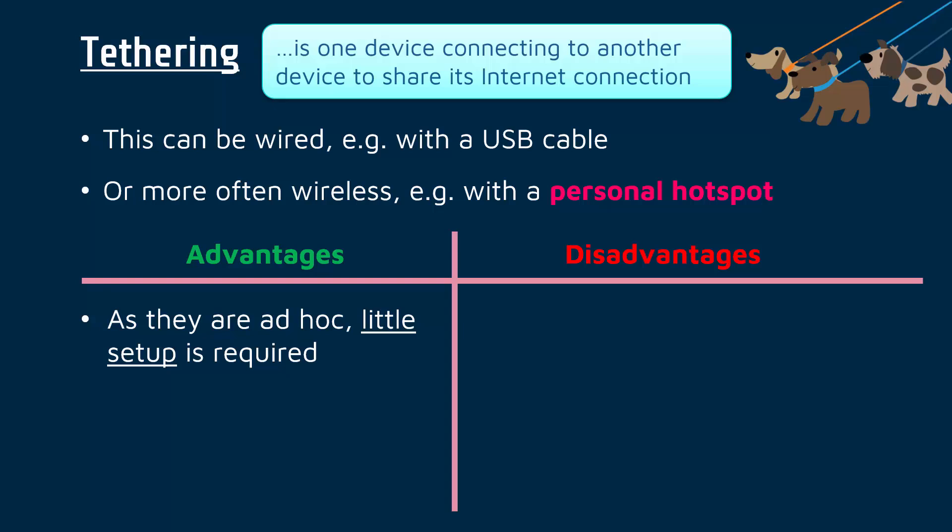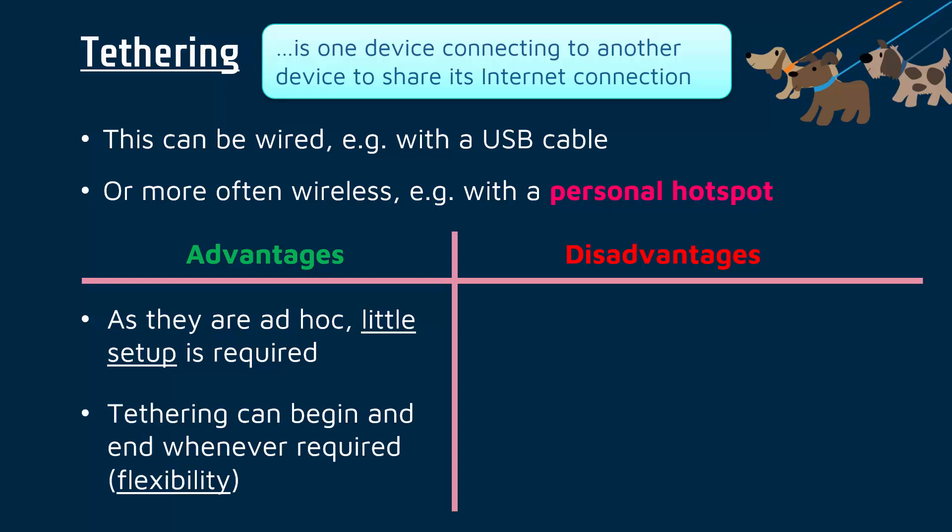Because tethering is an ad-hoc network, you don't need much setup. As a quick recap, ad-hoc means we can very quickly set up a network — it's very flexible, often for quite a short period of time. You can launch a hotspot very quickly on your phone, use it for two minutes, close it down, and you're done. You can just start it and end it whenever you want.